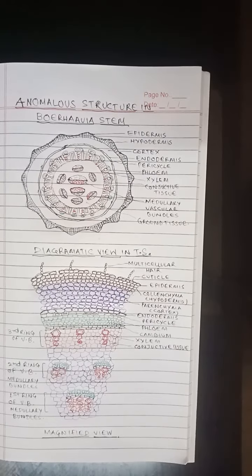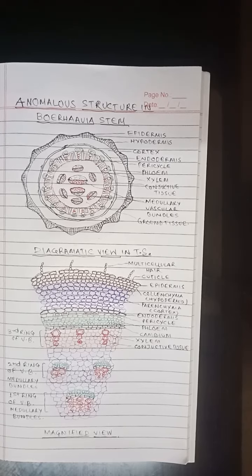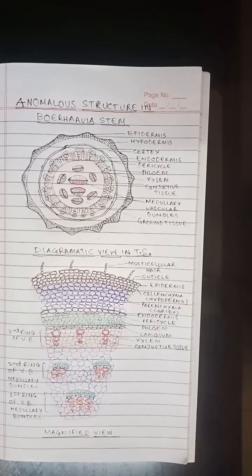Good morning, students. Today we study about the anatomical structure in dicot stem. The example is Boragia stem.